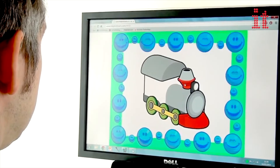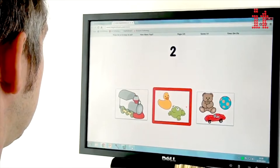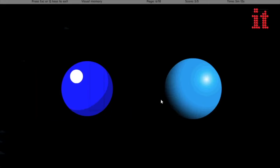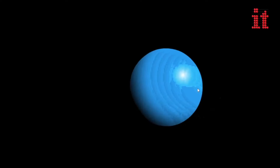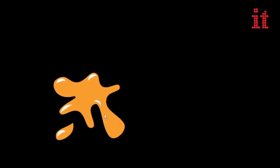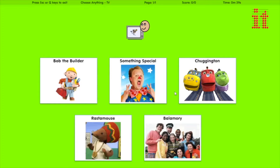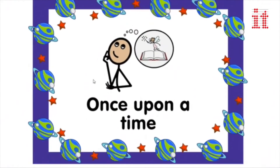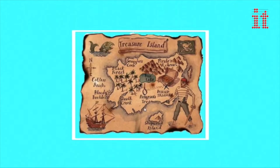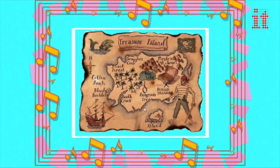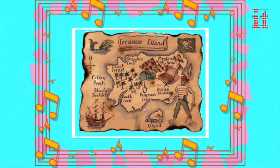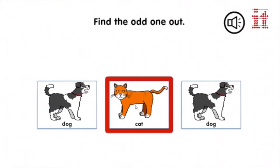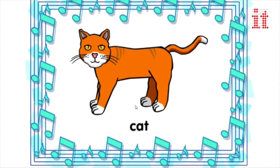Use Choose It Maker 3 to combine photographs, symbols, texts and sounds to create cause and effect activities, matching activities, choice boards, stories, comprehension assessment, games, quizzes and much more.